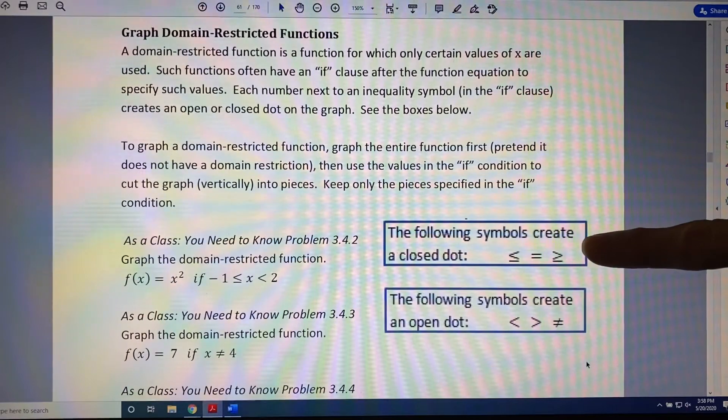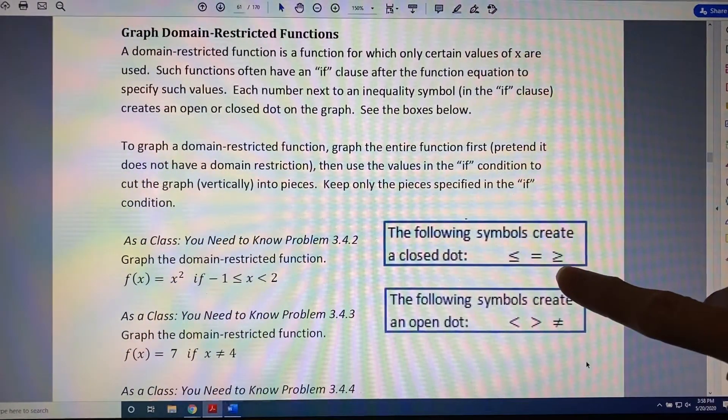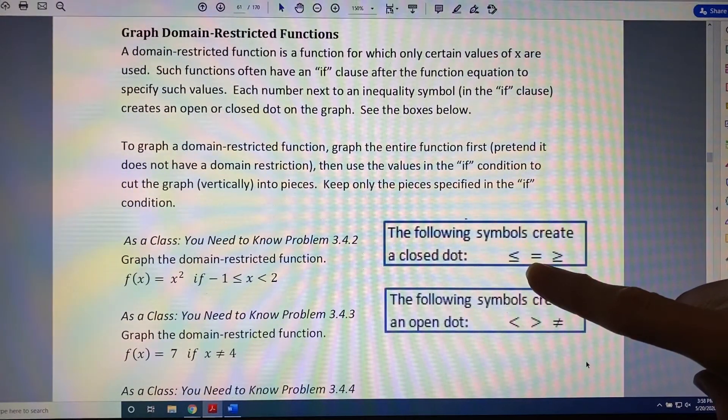So, the following symbols create a closed dot: the less than or equal to symbol, the greater than or equal to symbol, or the just plain equals to symbol.